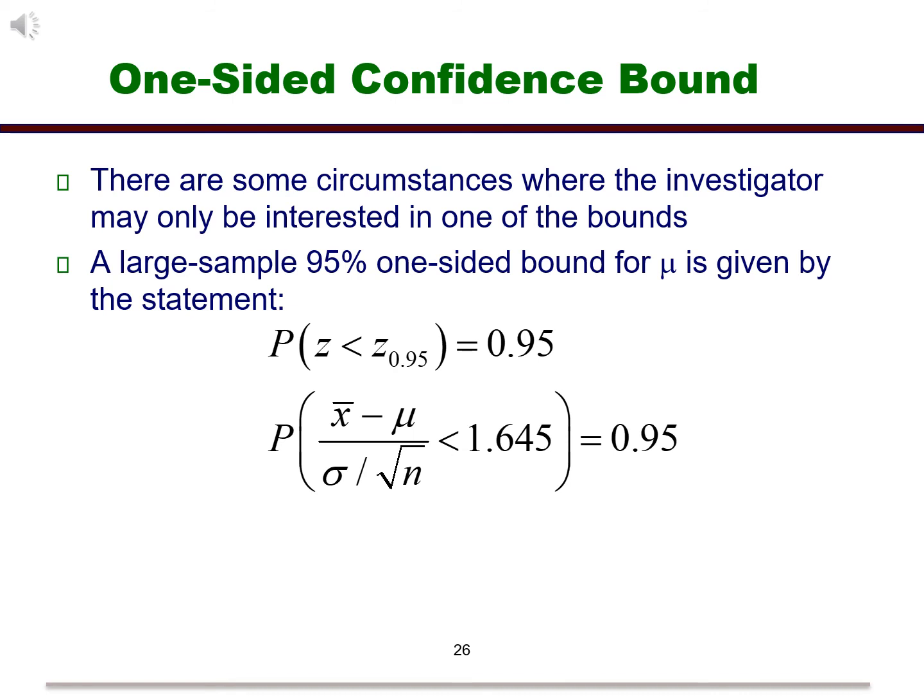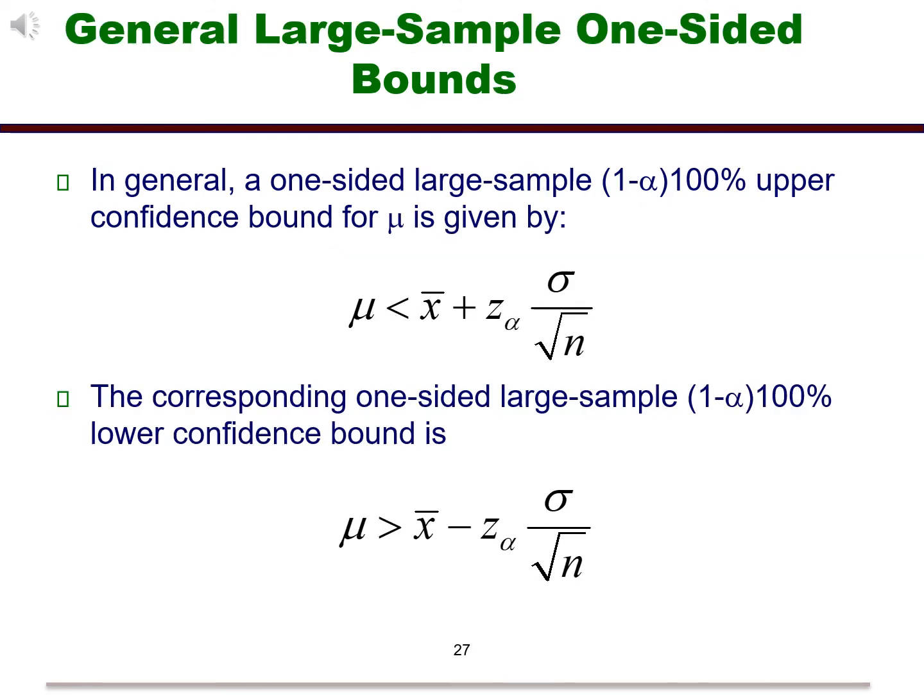The difference between a one-sided bound and an interval is that there is no need to split the probability alpha. So instead of using 1 minus alpha over 2, we will just use 1 minus alpha. The formulas for either side of the interval as a bound are given in the slide. Notice that we have alpha with the critical point instead of alpha over 2. Also, we have less than or greater than signs instead of a plus or minus. Let's look at an example.